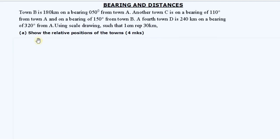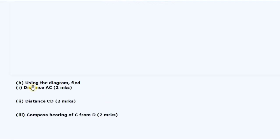For part A, show the relative positions of the towns. For part B, using the diagram — that is the scale drawing we shall have drawn for part A — find distance AC for Roman numeral 1, then Roman numeral 2, distance CD, and finally the compass bearing of C from D.